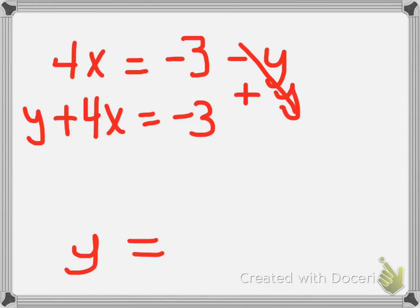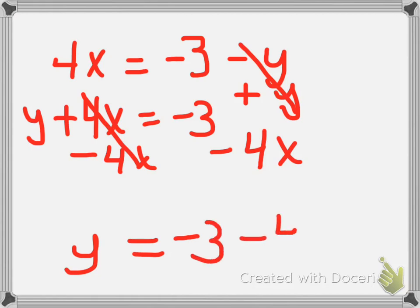The next and last step would be just to subtract 4x from both sides. So now my equation will be y equals, by itself on the left side, y is equal to negative 3 subtract 4x.